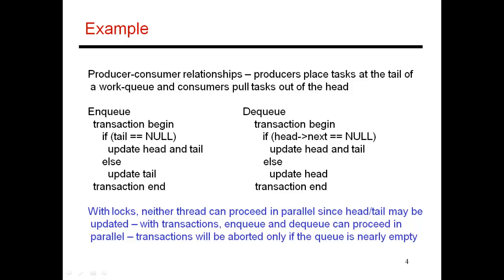To improve performance, I introduce fine-grained locks. For enqueue, I acquire a lock that prevents other enqueues but allows parallel dequeues. For dequeue, I acquire a separate lock that prevents other dequeues but allows parallel enqueues. Then if I enter the corner case where I'm changing both head and tail, I acquire a second lock to also prevent dequeues. And that thread would similarly acquire the second lock to ensure enqueues can't happen simultaneously.